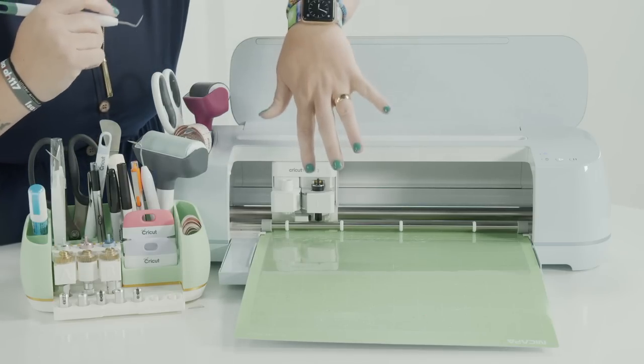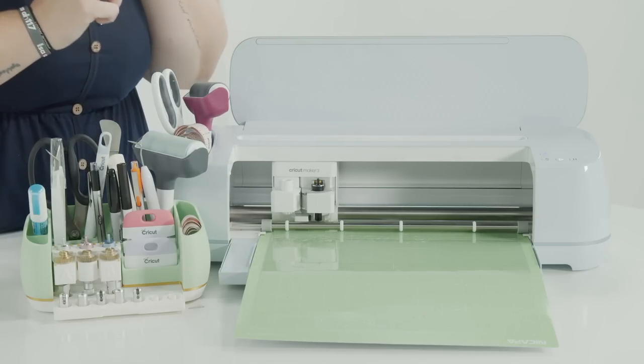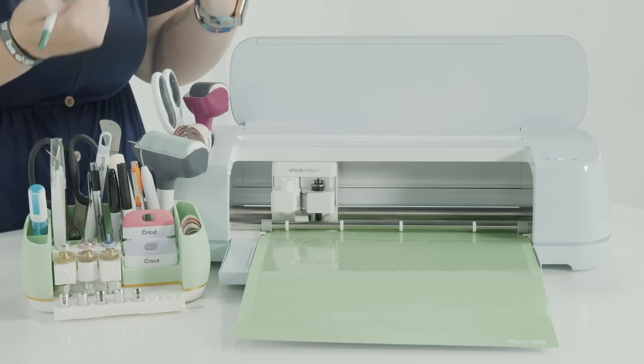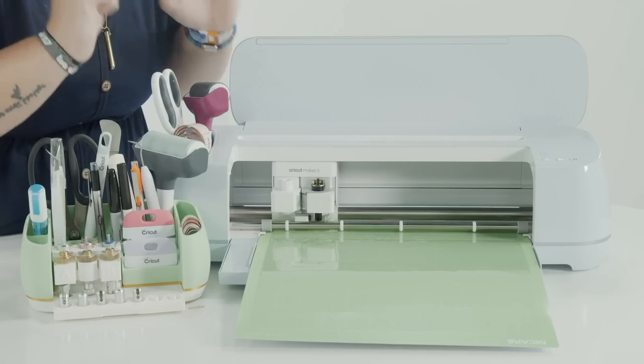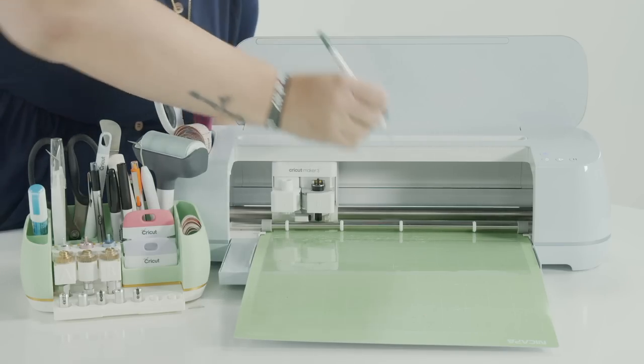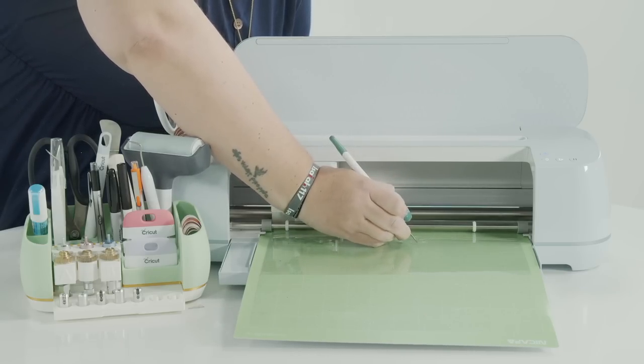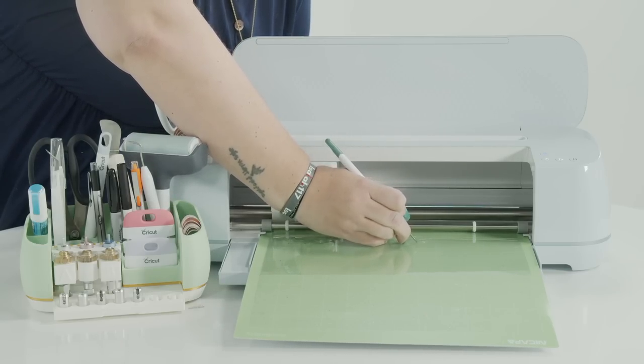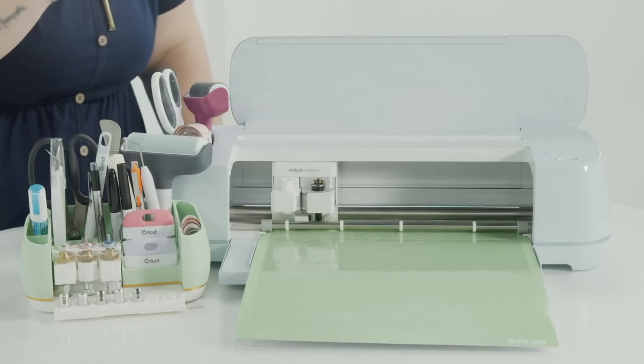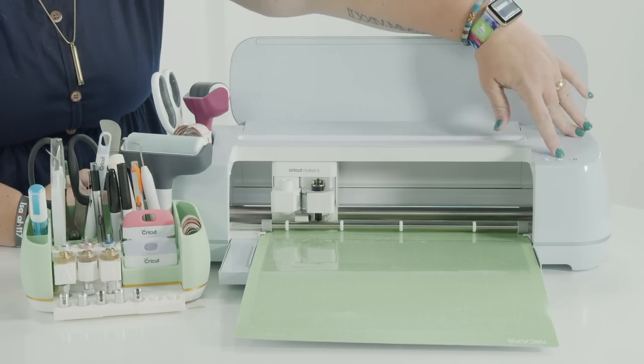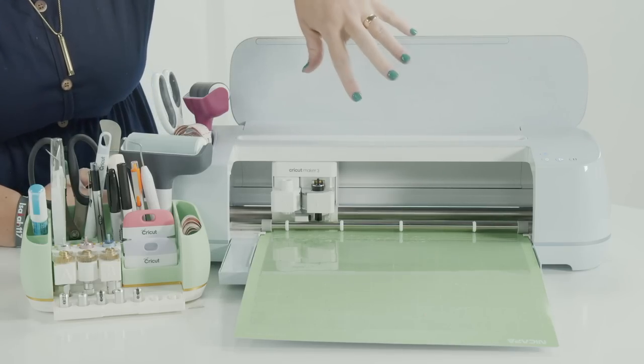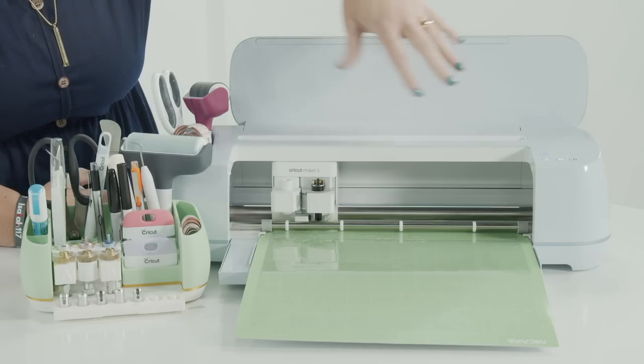Okay, so it's always important when you're using a setting that's not intended for a specific product to check your product, check the cuts before you unload. So do not unload. Maybe grab a little weeding tool and see if your product or the material has cut all the way through. This one has not. So without unloading, I want to go ahead and press my start button again so that it will do another pass of cuts.